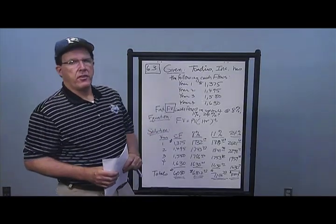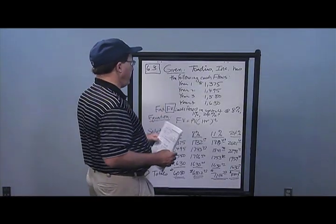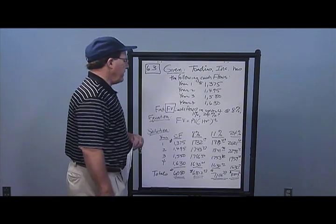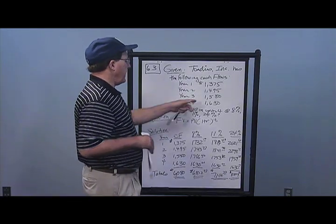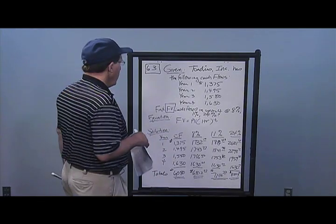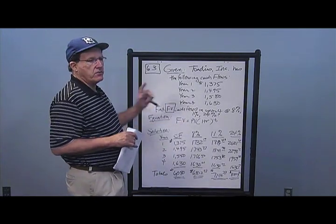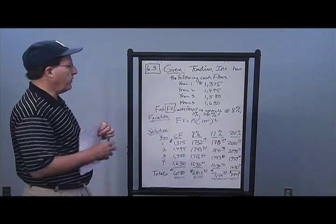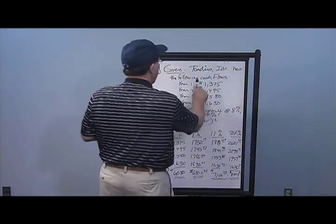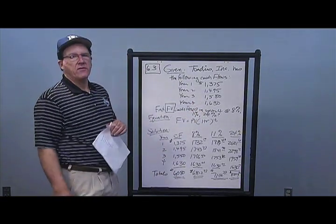In Problem 3, we see that Toadies has the following cash flows: $1,375 in year one, $1,495 in year two, $1,580 in year three, and $1,630 in year four. We want to find the future value of these cash flows — concentrate on that FV, future value. So we want to compound these out to the right. Do we have an annuity? No — these are all different cash flows, so I must revert back to Chapter 5.